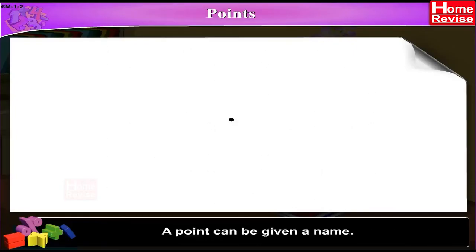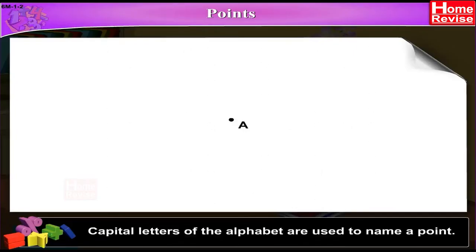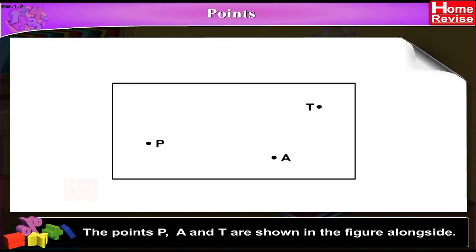A point can be given a name. Capital letters of the alphabet are used to name a point. The points P, A and T are shown in the figure alongside.